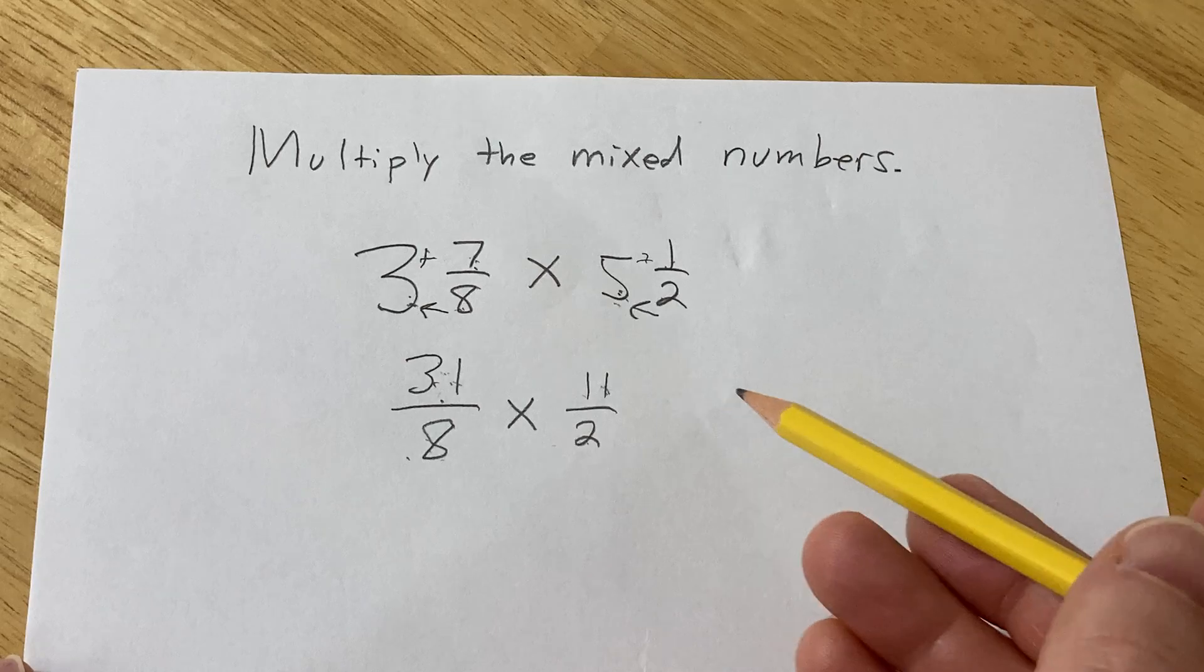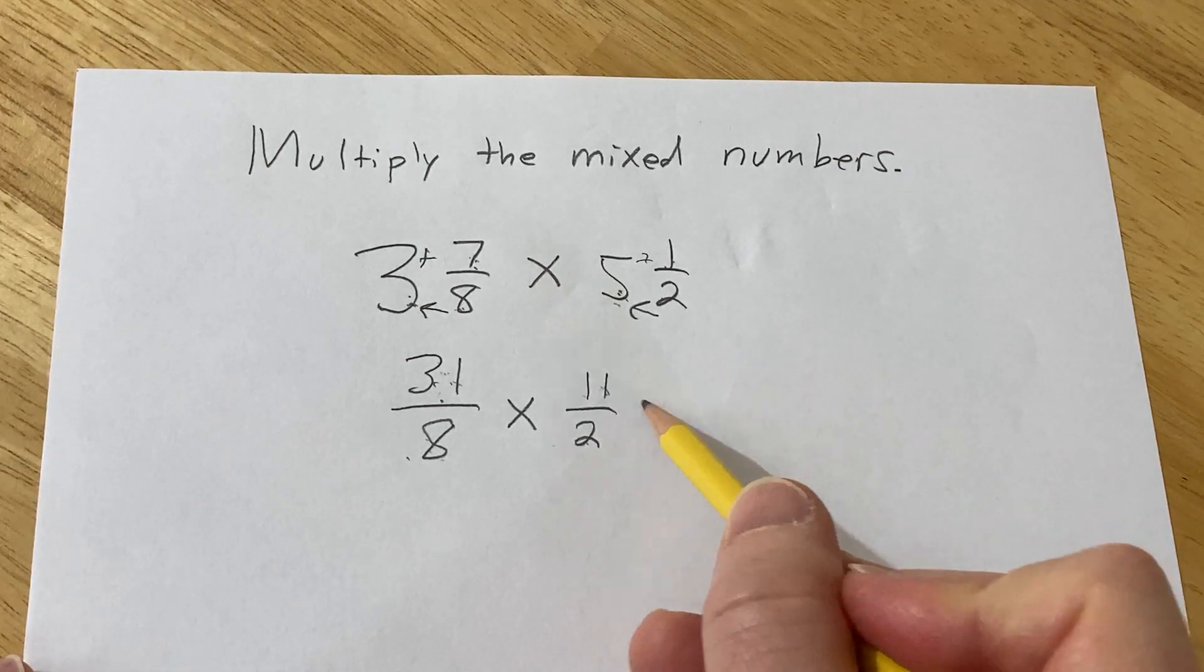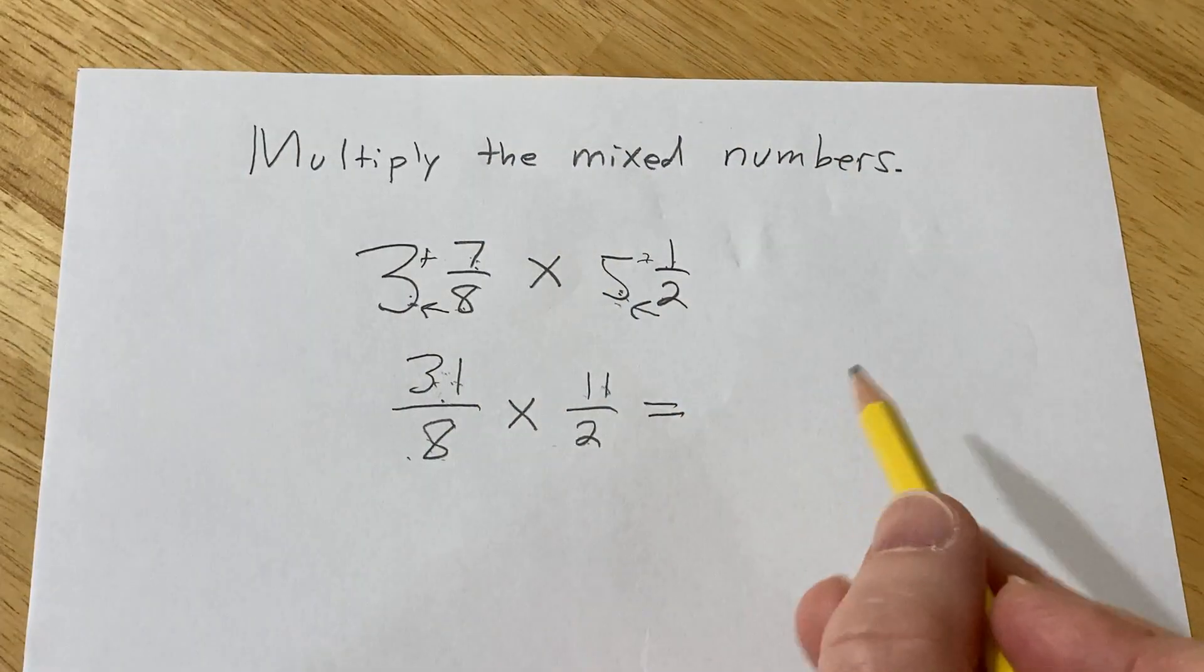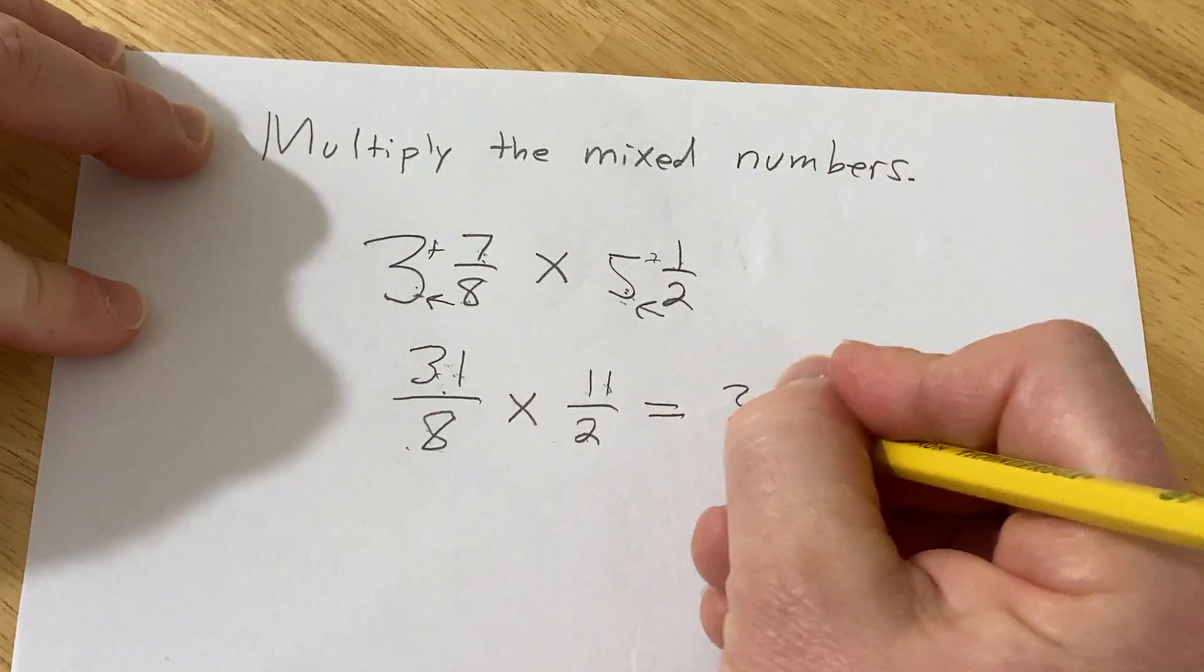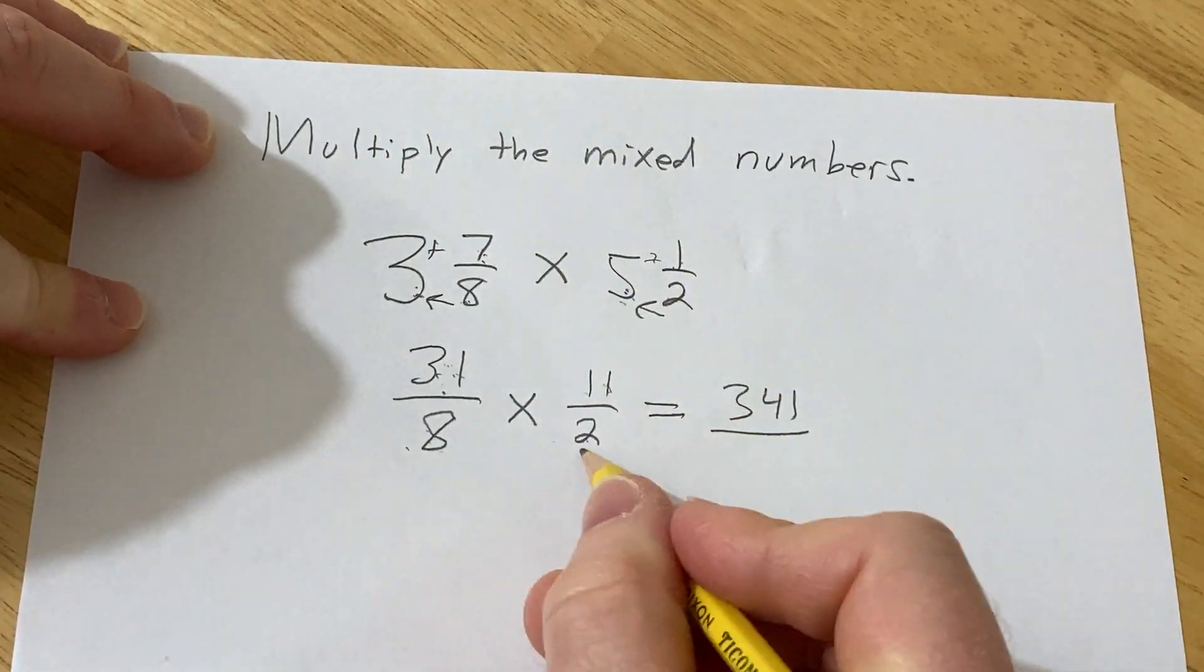So now we just have to multiply straight across. So this is going to get kind of messy so I'm going to cheat and use the calculator. So 31 times 11. I'll do it with my calculator first and then I'll show you how to do it by hand. So this is 341. And then 8 times 2 is 16.